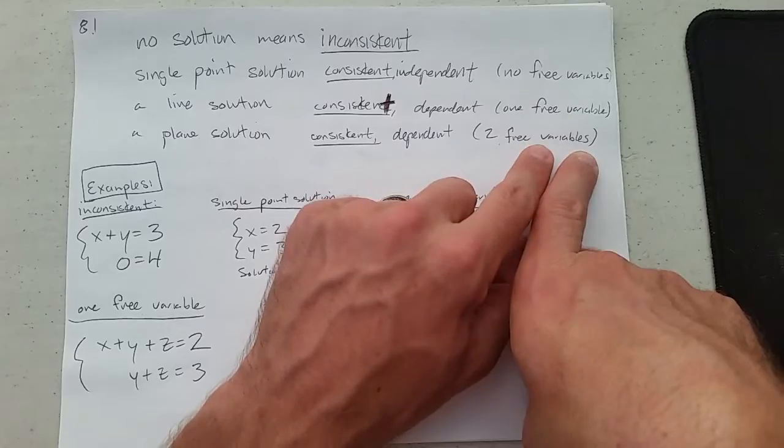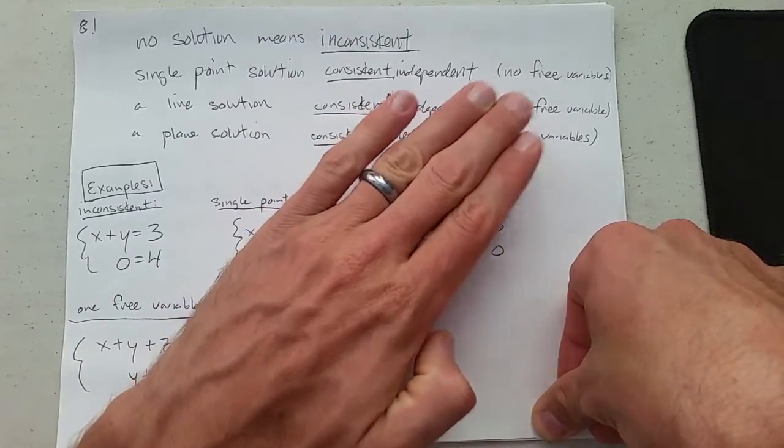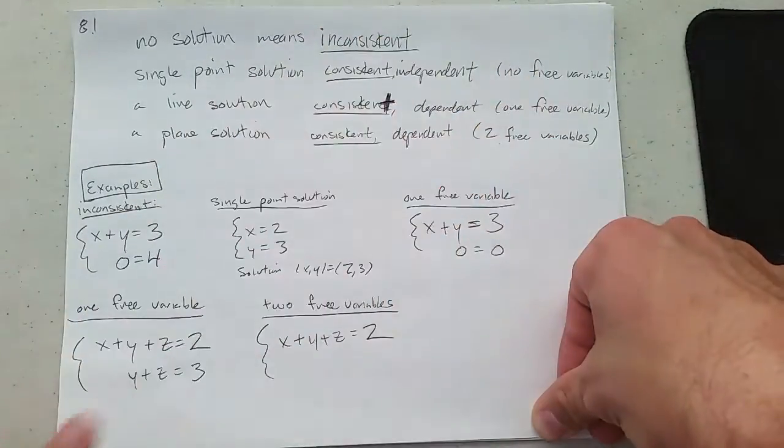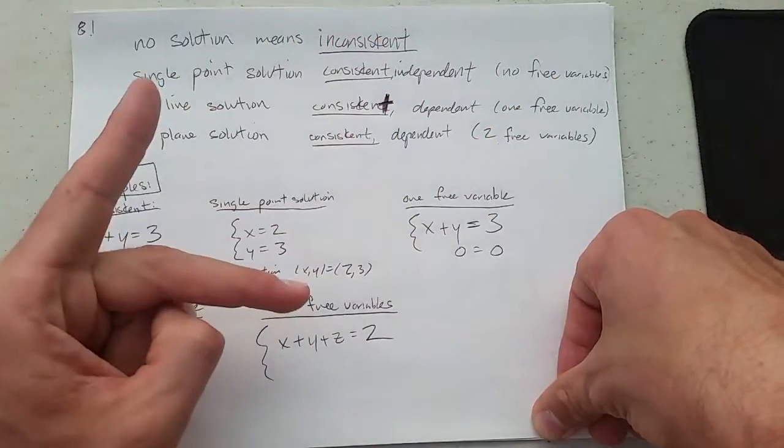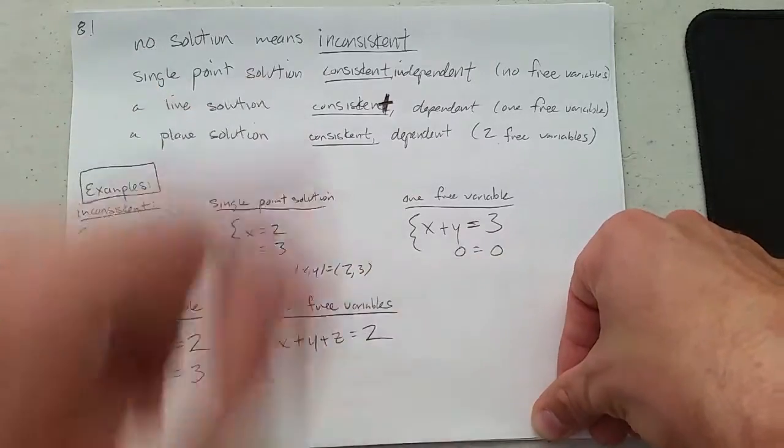And you can think of the free variables as the dimensions of freedom. If you have one free variable, you can go in one direction, forwards or backwards. If you have two free variables, you could go in two different directions and that would form a plane.